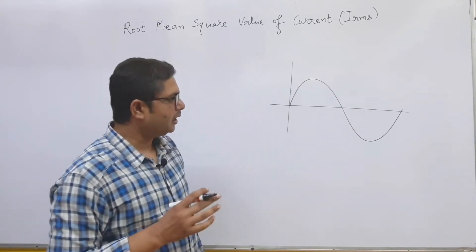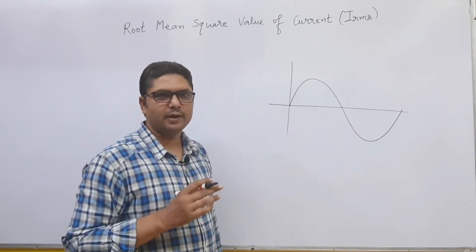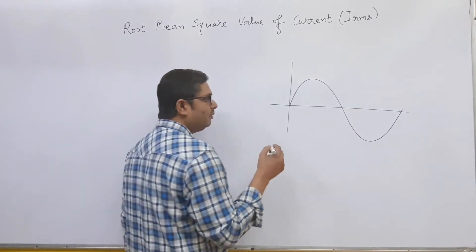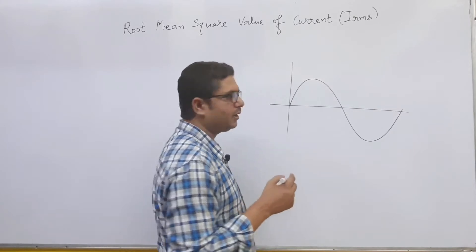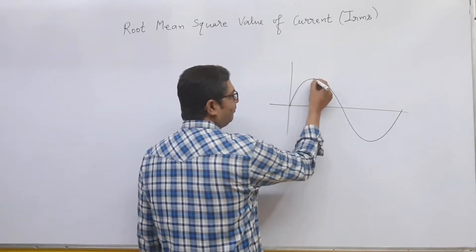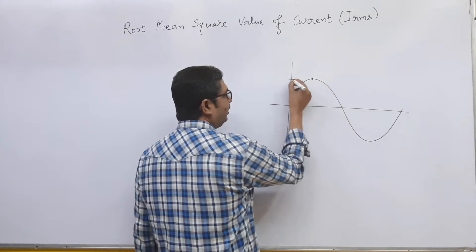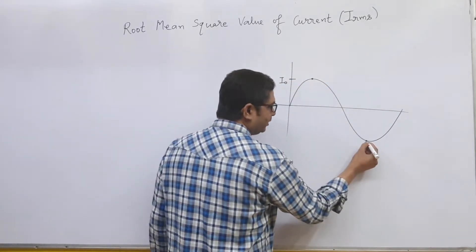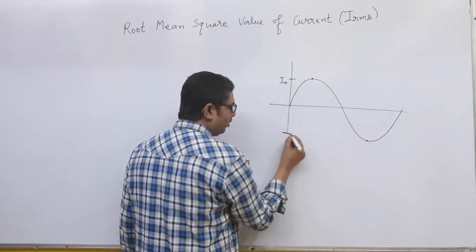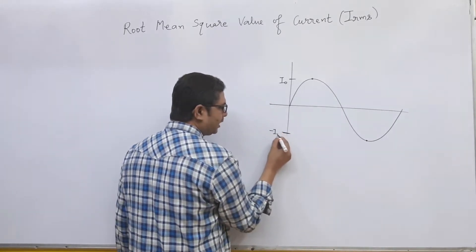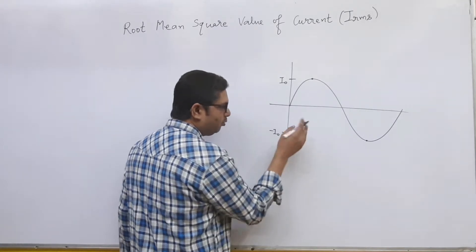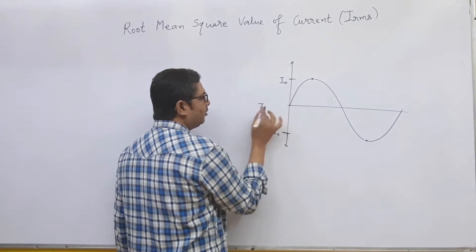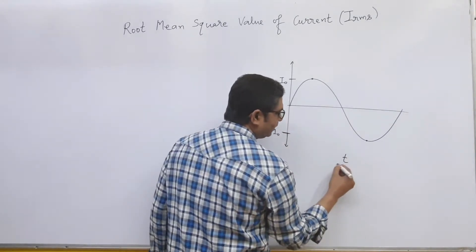Now in this alternating current graph we are marking some points such as peak current. The maximum value of current is said to be peak current. In this graph, the maximum value point is I₀, known as peak value. The point towards the negative side is minus I₀. This line indicates current I — this is the I versus time t graph.